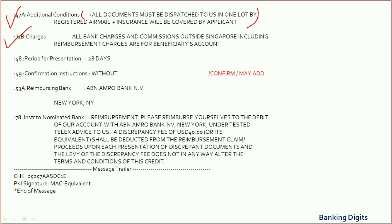Field 48 refers to the period of presentation. Here it is mentioned as 28 days, meaning within 28 days from the date of shipment, documents need to be presented to the place of expiry. It is very important to note that this period cannot go beyond the expiry date of the LC. If 28 days from the shipment date goes beyond the expiry date, then the LC expiry date should be considered as the period of presentation.